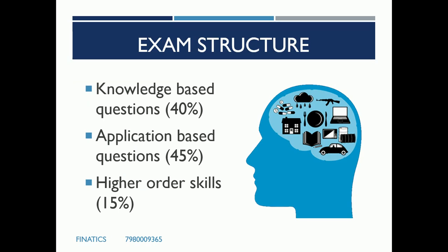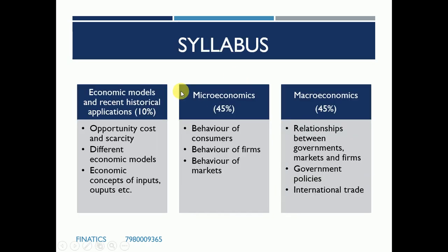Looking at the basic paper structure, there are knowledge-based questions worth 40% — direct questions from the material testing your concepts. Application-based questions are 45% — these are case study type questions where they give you a scenario and you answer based on your economics concepts. Then there are higher-order skills questions worth 15%, which test how you think and apply what you have learned. This 15% is what makes the difference in your paper.